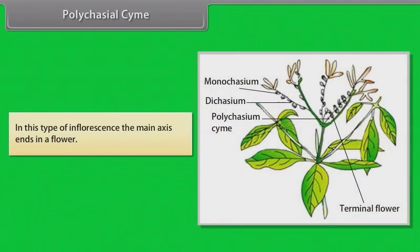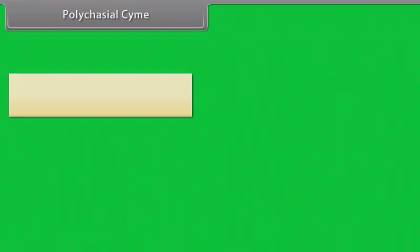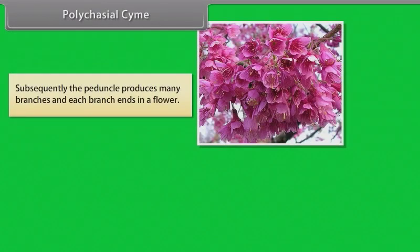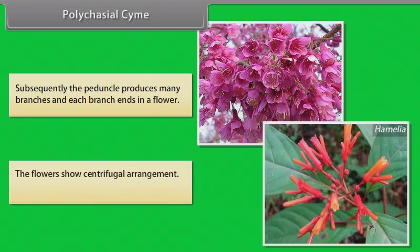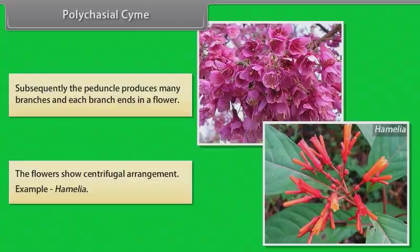In polycasial cyme, the main axis ends in a flower; subsequently the peduncle produces many branches and each branch ends in a flower. The flowers show centrifugal arrangement. Example: Hamelia.